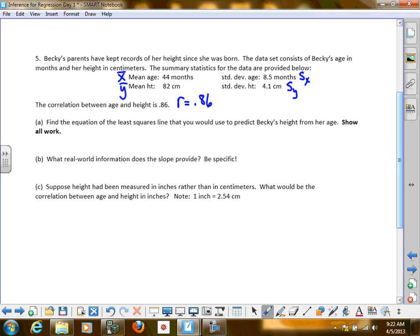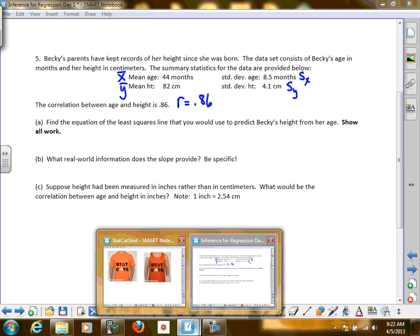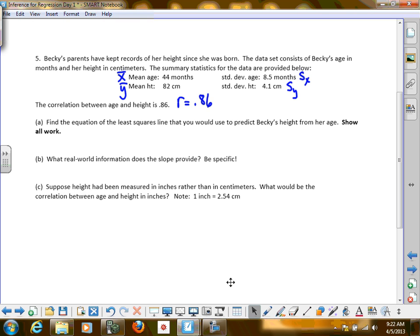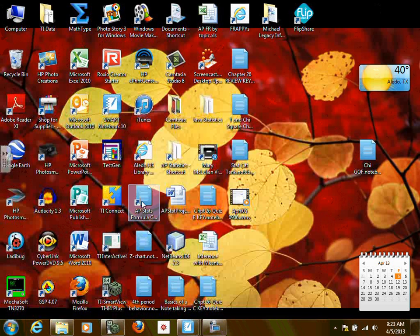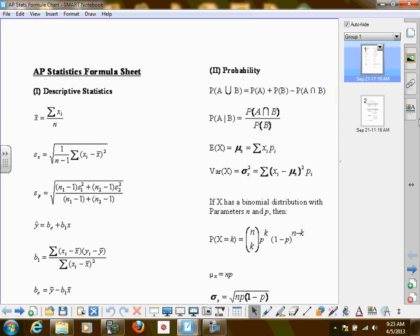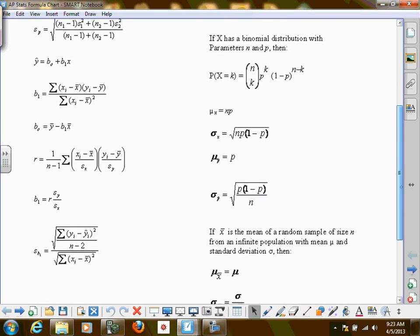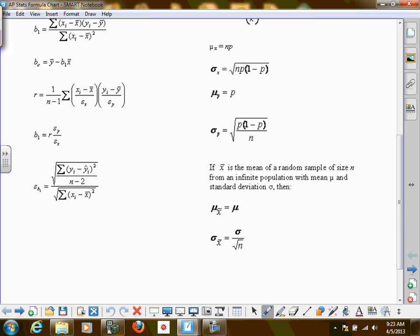Find the equation of the least squares regression line that you would use to predict Becky's height from her age. And this is where we have done this before, but you may have forgotten this process. So I want to show that to you. On your formula chart, there is the formula for slope. On your formula chart, on the front, here, we have basically the only one you want to deal with on the front, on this side, is right there. That is your slope.